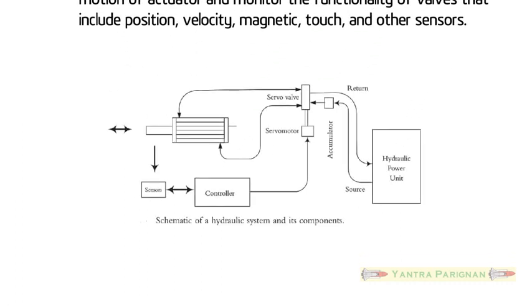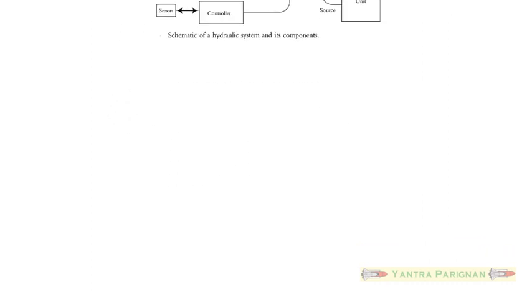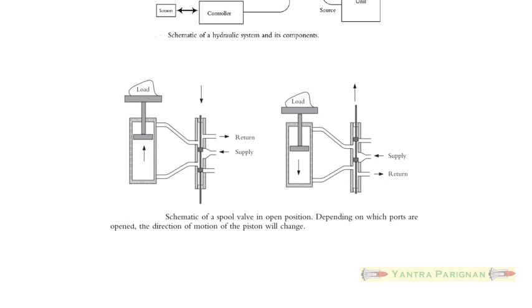Figure shows the components of the hydraulic actuating system that consists of hydraulic pump, servo valves, accumulator, connecting hoses, and feedback sensors. Another figure shows that the direction of motion of the piston rod is going to change with fluid supply and return ports.